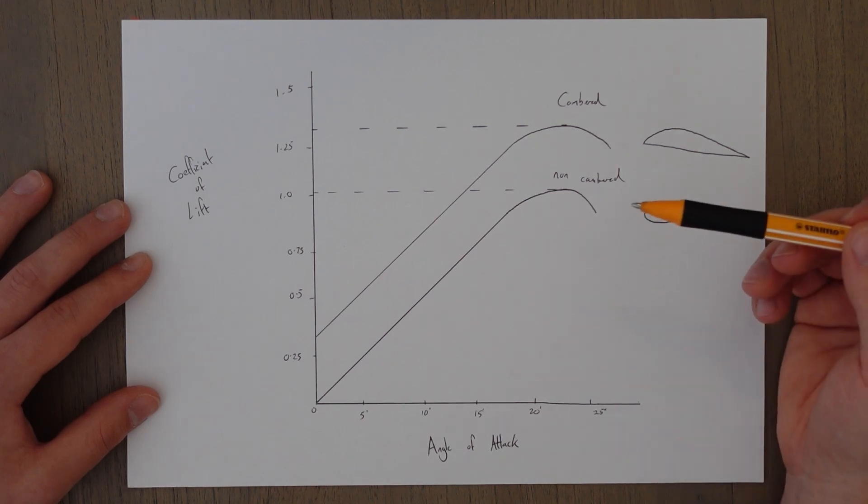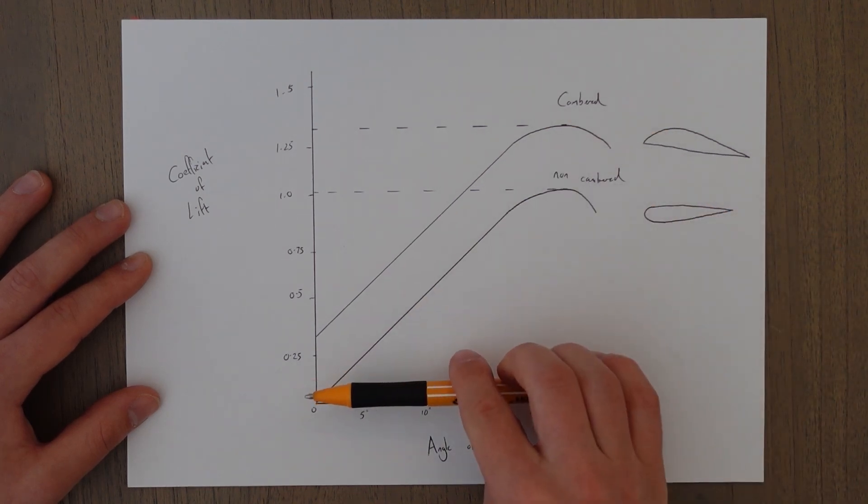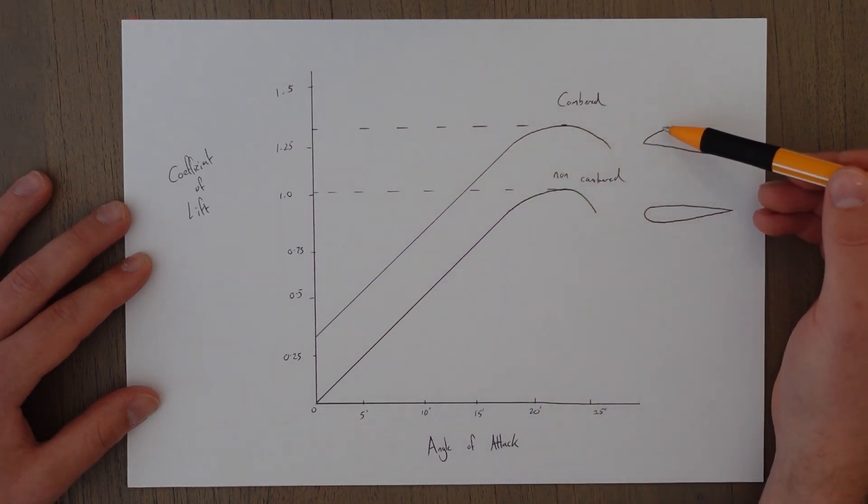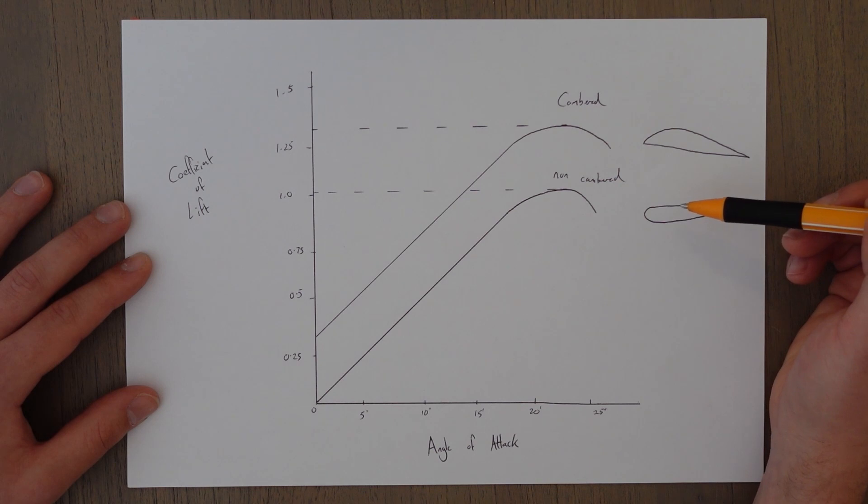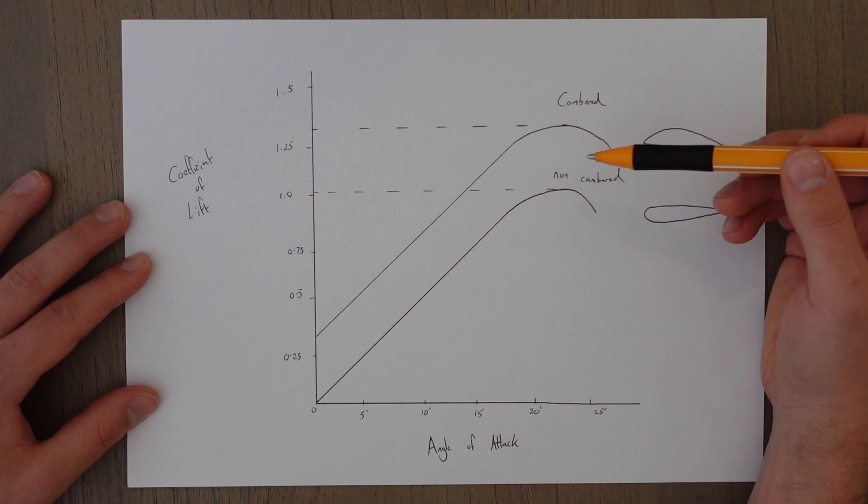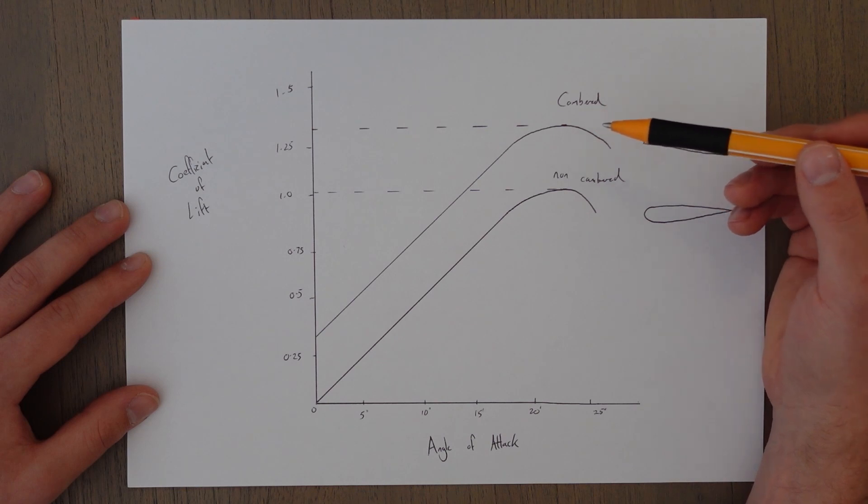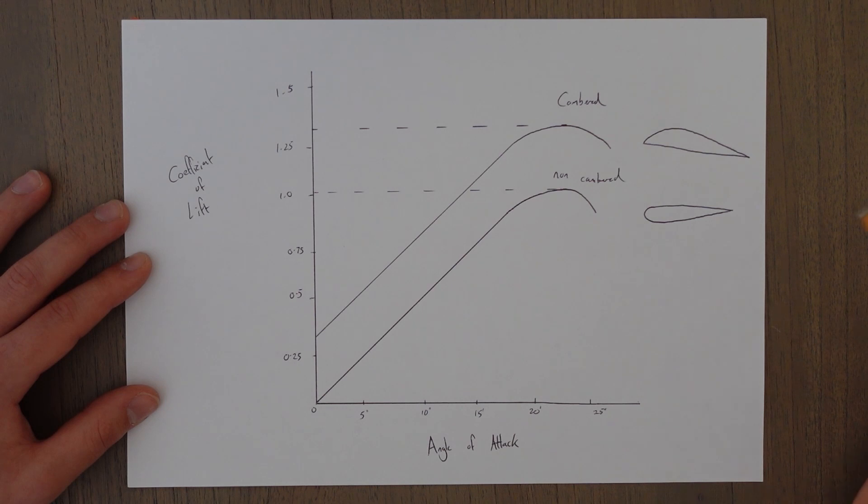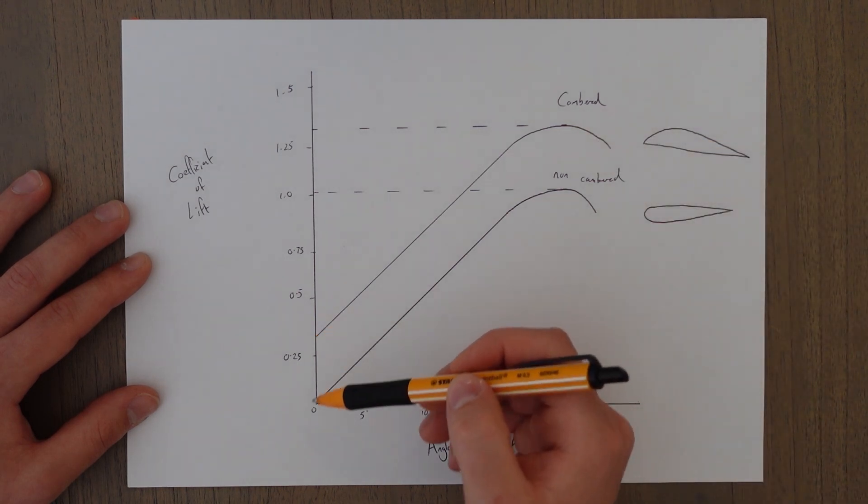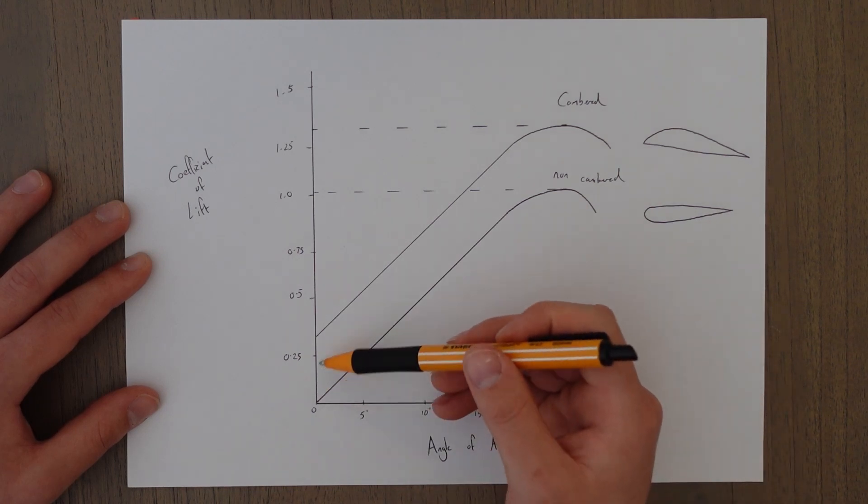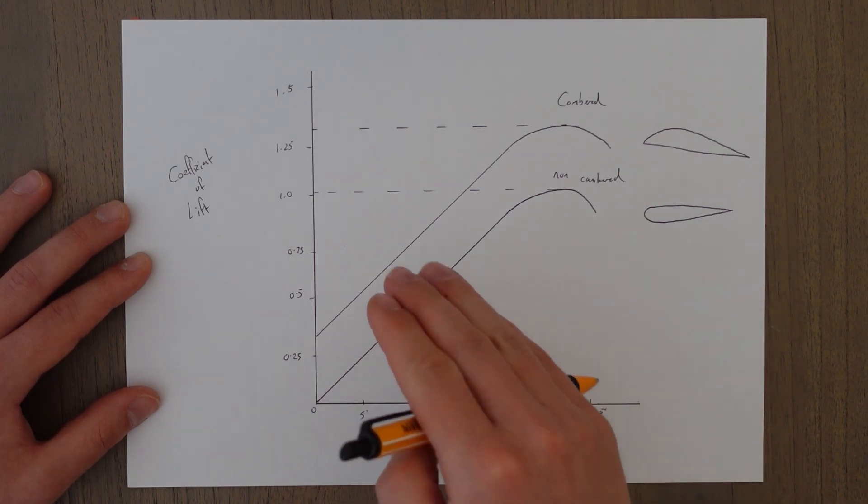The interesting thing about cambered wing is it essentially pushes that whole graph up. So the cambered nature will accelerate the air more than a symmetrical one, which is the reason for this higher CL max. You get higher dynamic pressure, lower static pressure, larger pressure differential, bigger reactive force. It also has the added bonus that it can create lift even when it's zero angle of attack. This means that the wing can start creating lift before the aircraft is rotated up.